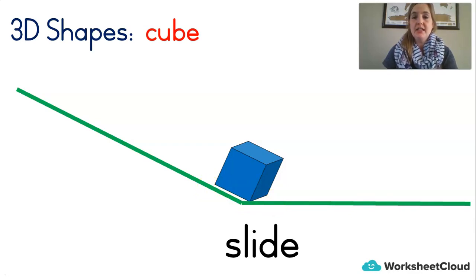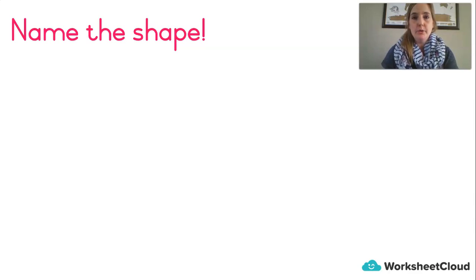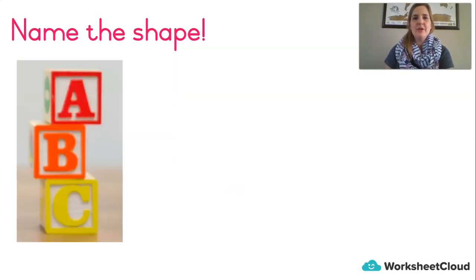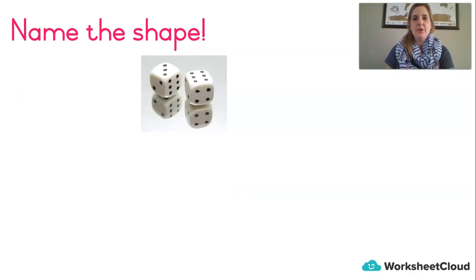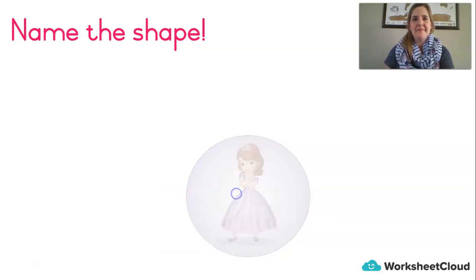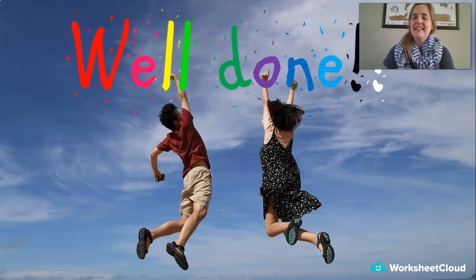So remember: what did the sphere do? It rolled. And the cube? It slides. Now we're going to play a game — you have to name the shape. If you said it before me, you get the point; if I said it first, I get the point. The answer will be sphere or cube. Let's go: sphere, cube, cube, cube, sphere, cube, sphere. Well done! How many points did you get? I bet you beat me — you're a bunch of smarty pants.